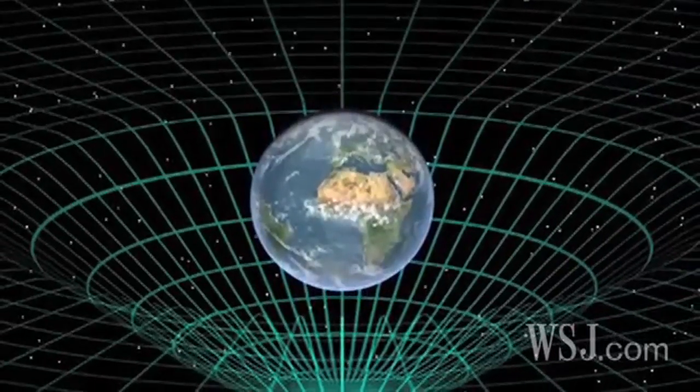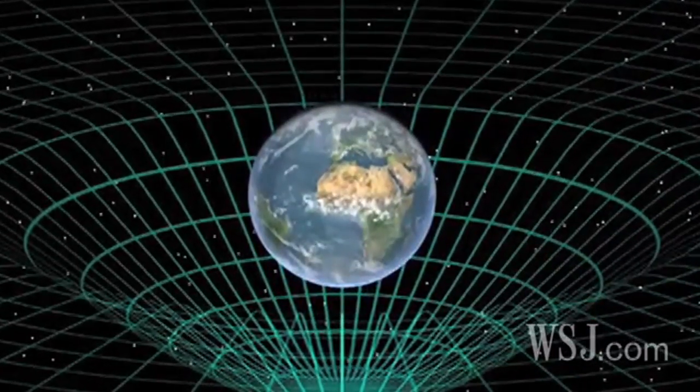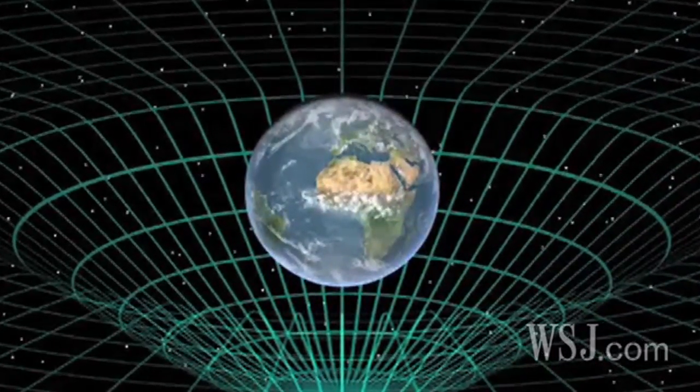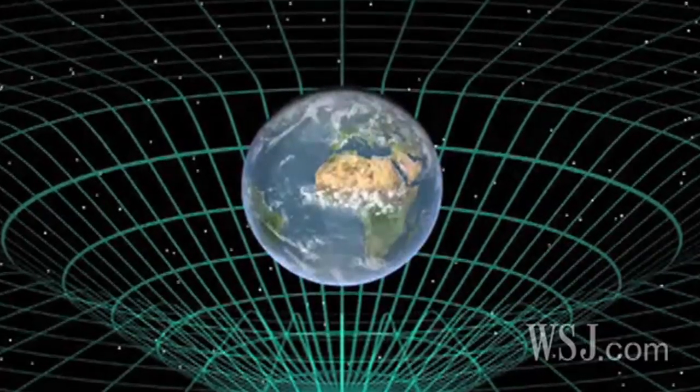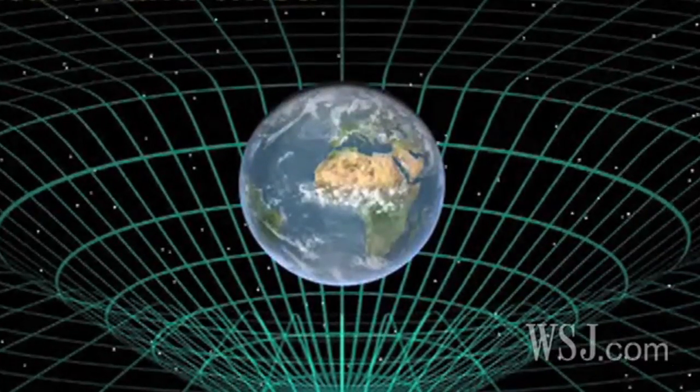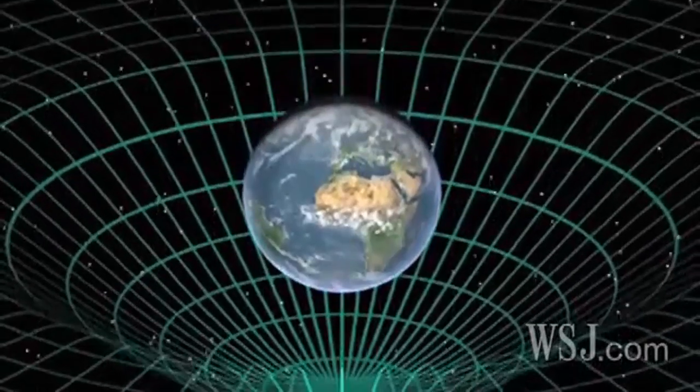The mass of Earth dimples this fabric much like a heavy person sitting on a trampoline. Gravity, Einstein says, is simply the motion of objects following the curving lines of the dimple.